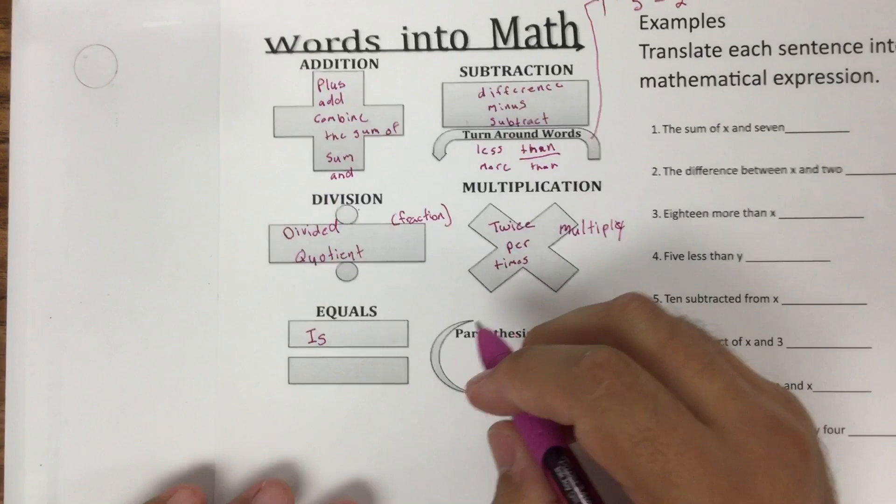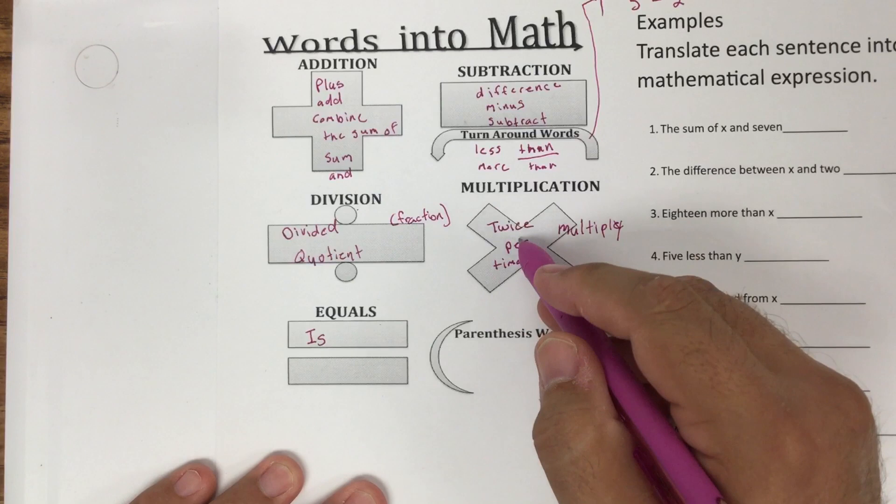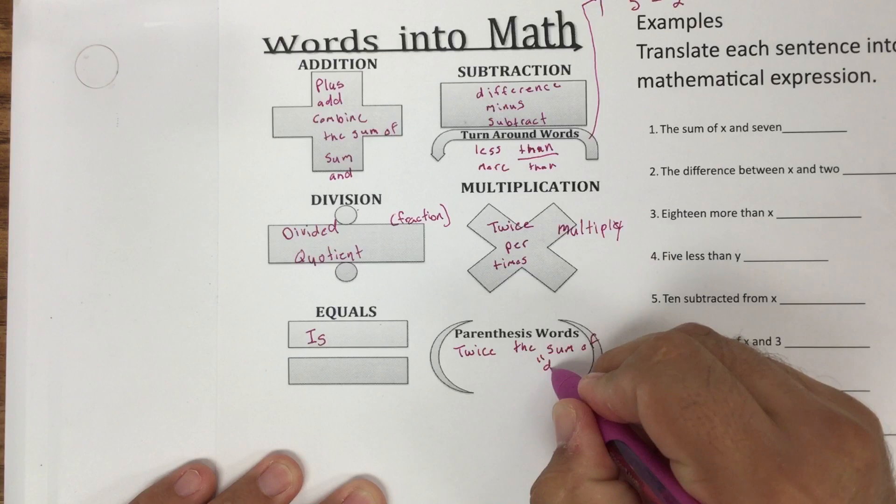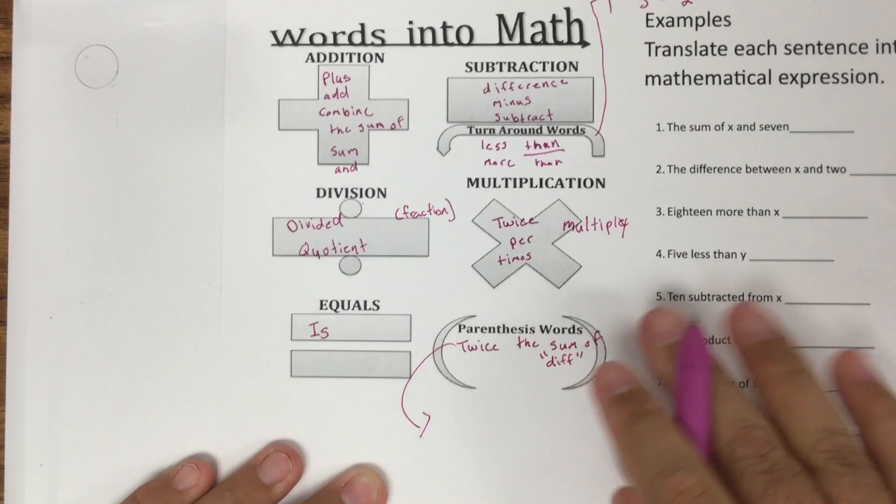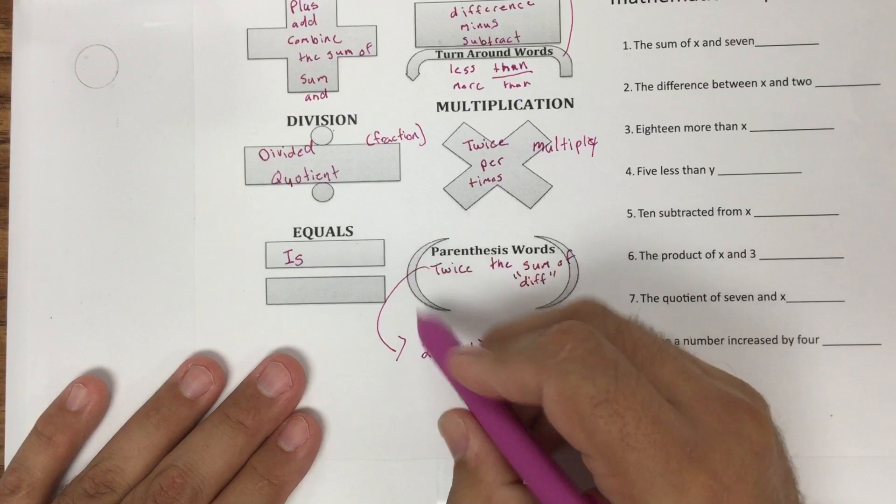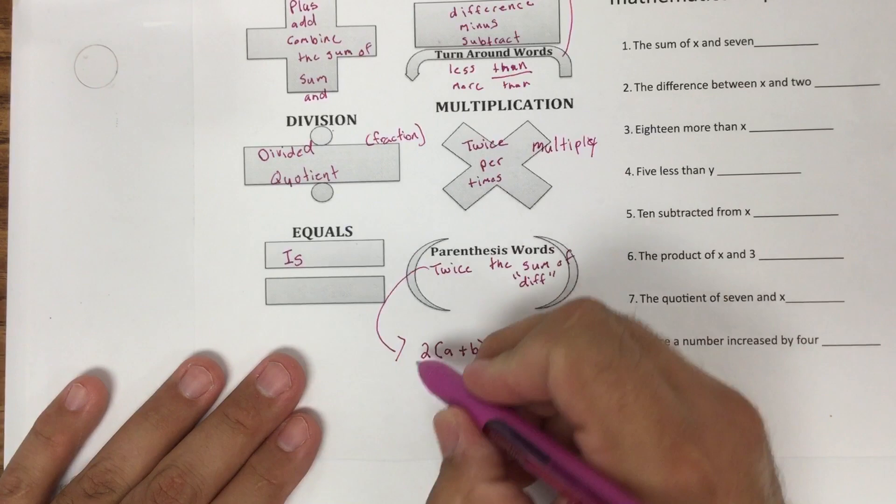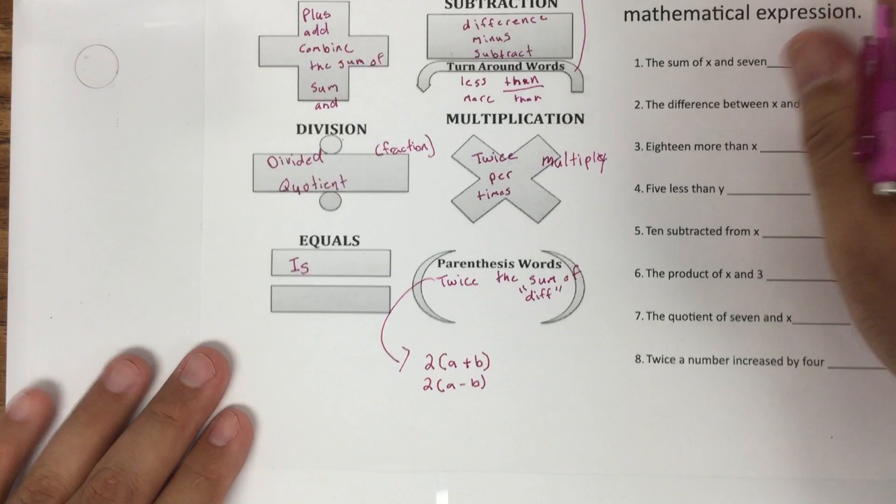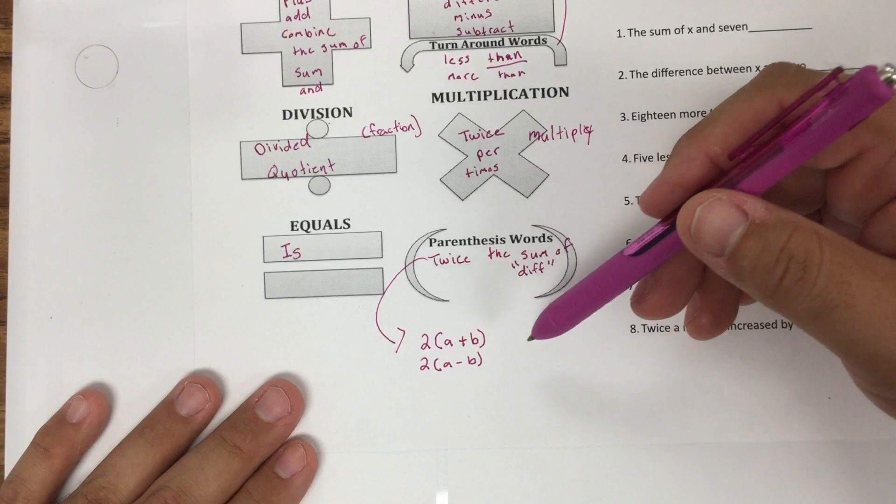You might even hear together, but usually together means addition. So I want to talk about parentheses words. Twice means multiplication, but let's say I said twice the sum of, or the difference of. What that means for an example - if I say twice the sum of, that's going to be two times parentheses, something, let's say A plus B, twice the sum. Notice that's where my parentheses coming from. What if I said twice the difference? Two times parentheses A minus B. But be careful because you might have those turnaround words. So be very careful with that.